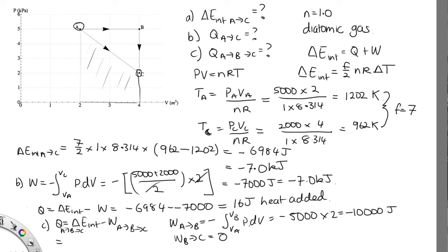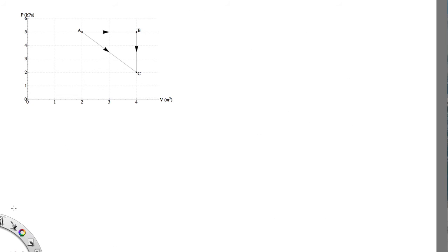Substituting everything in, the change in internal energy is the same minus 6,984, and the work is minus 10,000. Solving that on the calculator, we end up with 3,016 joules, which is equal to 3.0 kilojoules to two significant figures. Now let's calculate it the second way just to show you that this way is longer and it's probably not such a good idea.